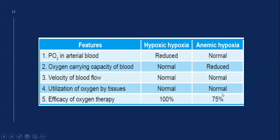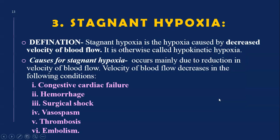In anemic hypoxia, the velocity of blood flow and utilization of oxygen by the tissue are normal. Oxygen therapy is about 70–75% efficient, because until you increase the carrying capacity — by correcting hemoglobin percentage or RBC count — anemic hypoxia cannot be completely resolved by oxygen alone.